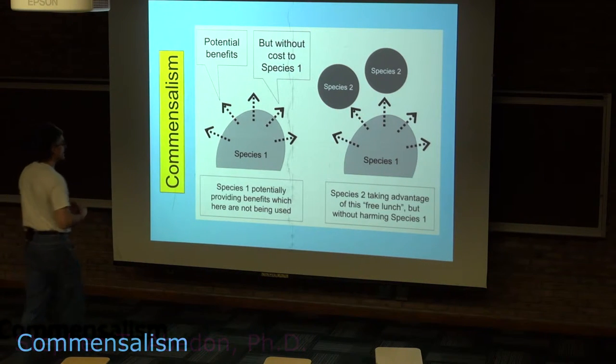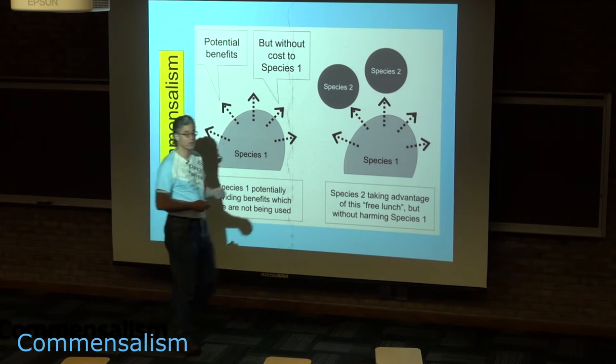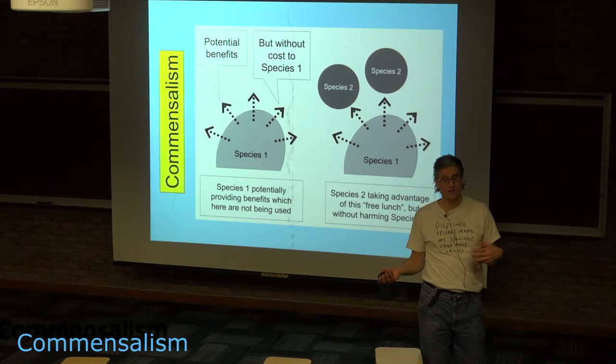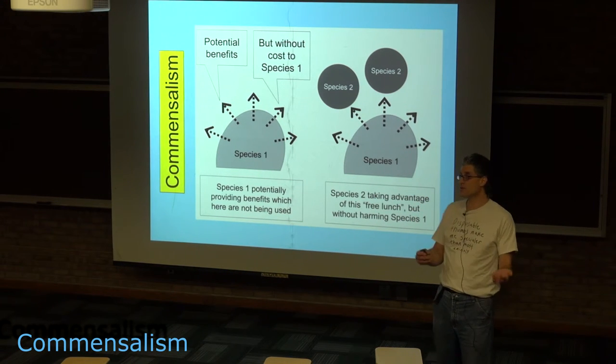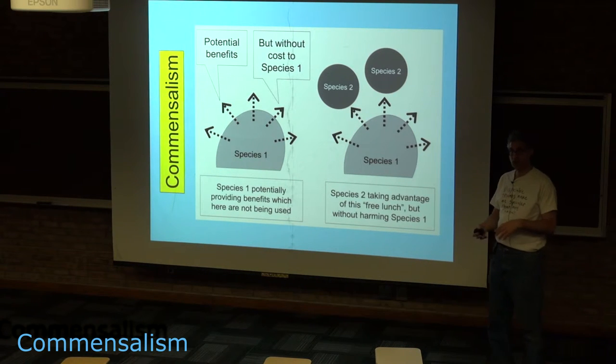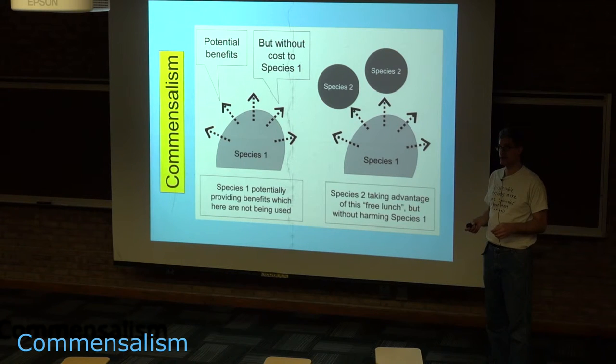In which case you have essentially a commensalistic relationship where you've got one individual giving forth wastes and another individual utilizing those wastes. If that other individual isn't harming the first individual, then the first individual may be neither harmed nor helped by the relationship.